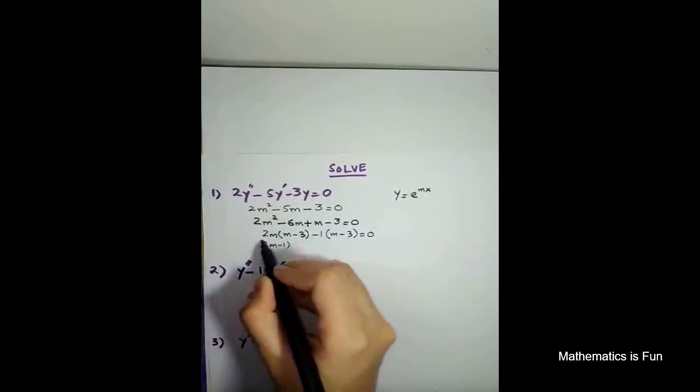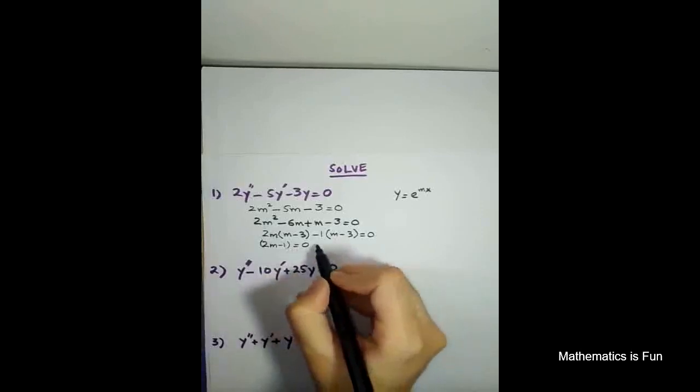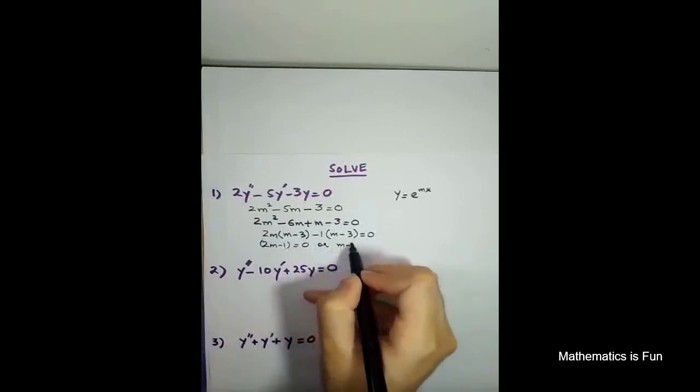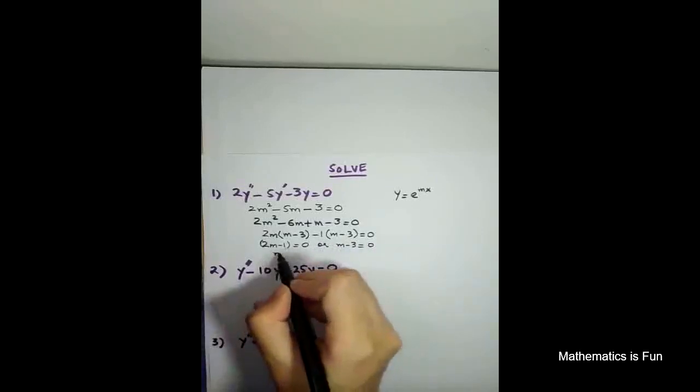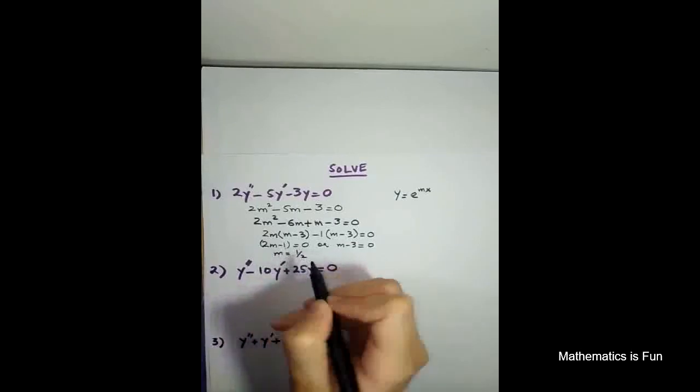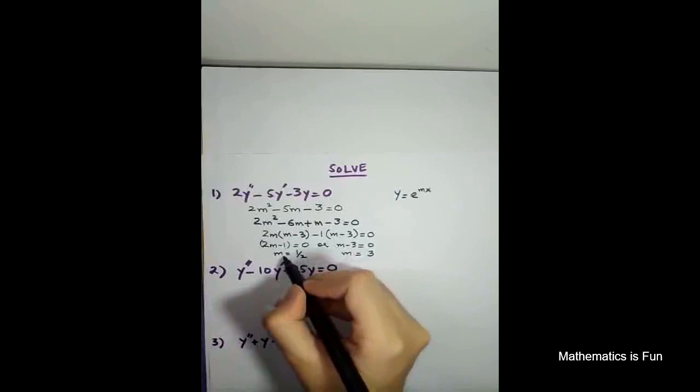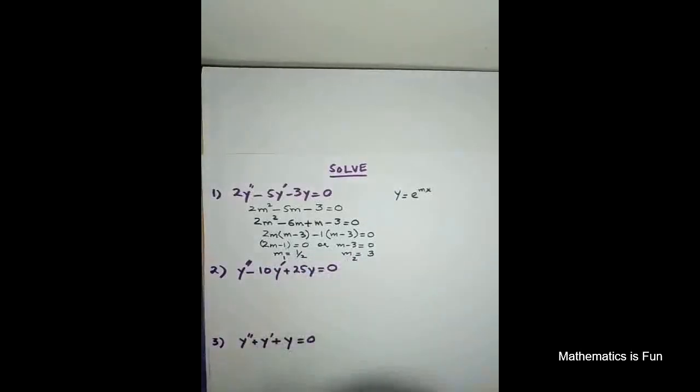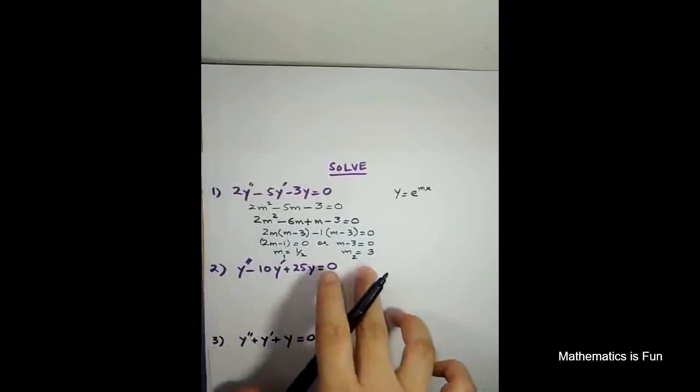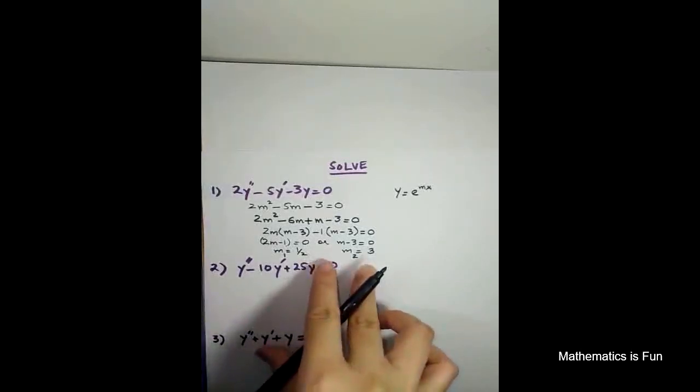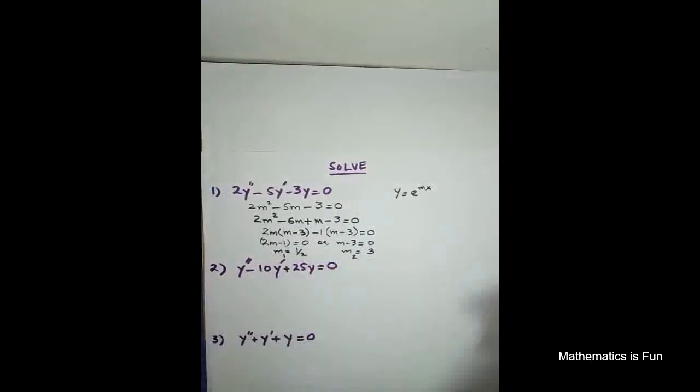So 2m minus 1 equals to 0, or m minus 3 equals to 0. So m is 1 by 2, or m is 3. So m1 is 1/2 and m2 is 3. So it meets the case number 1. That means both roots are real and distinct, different from each other.